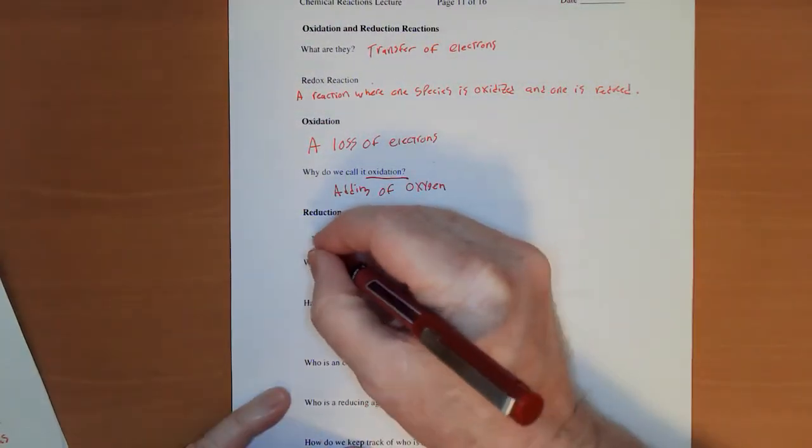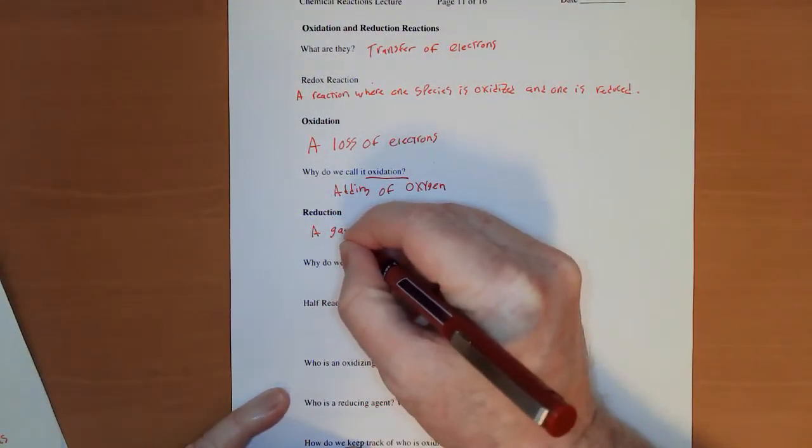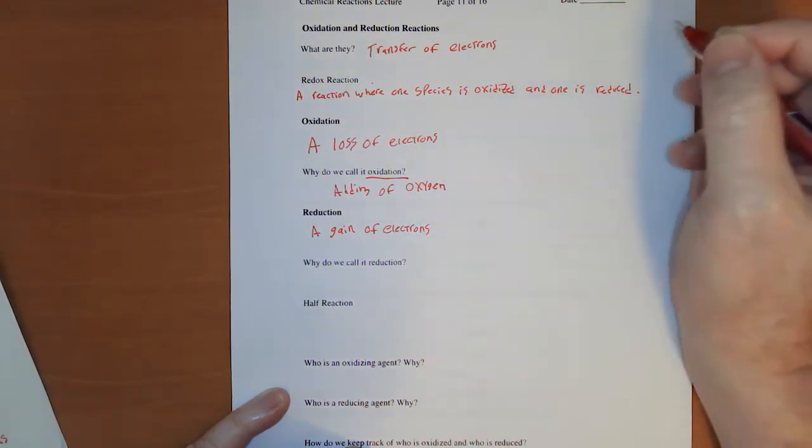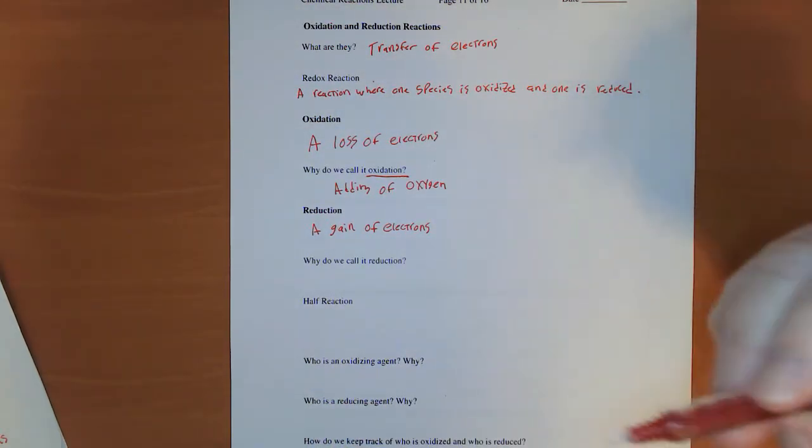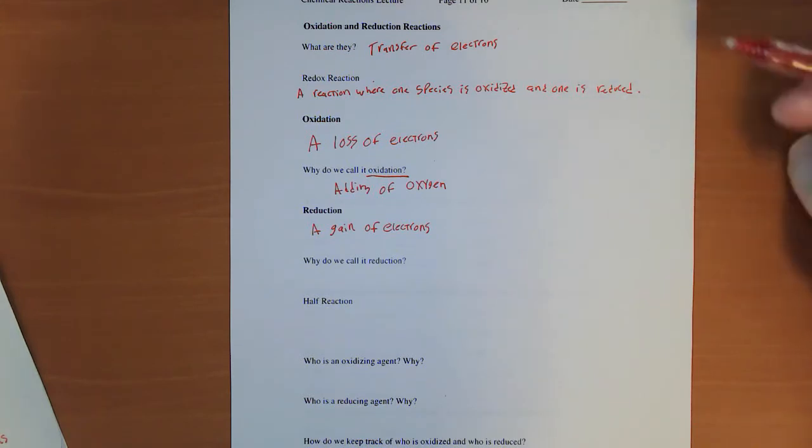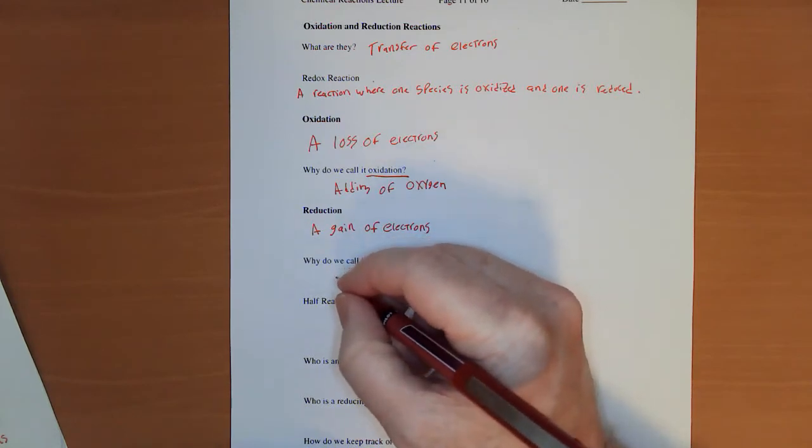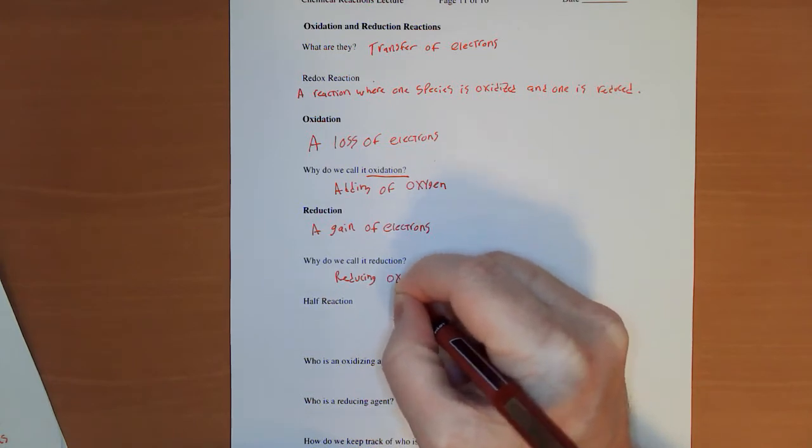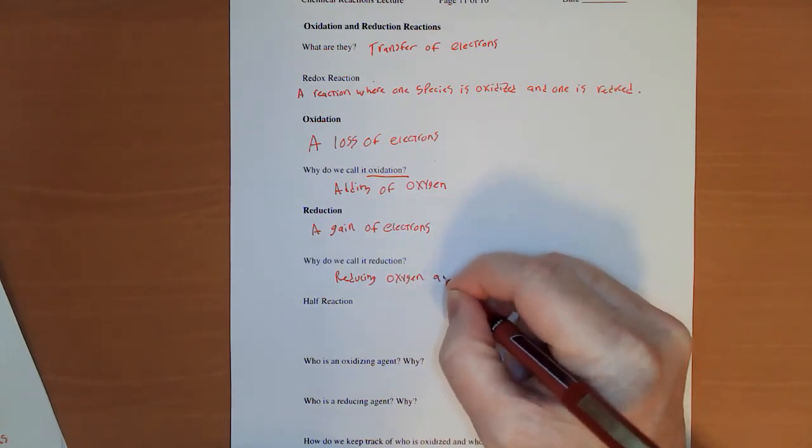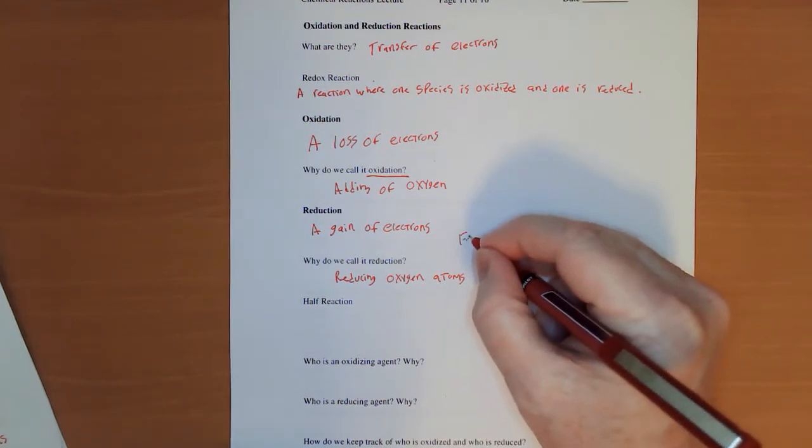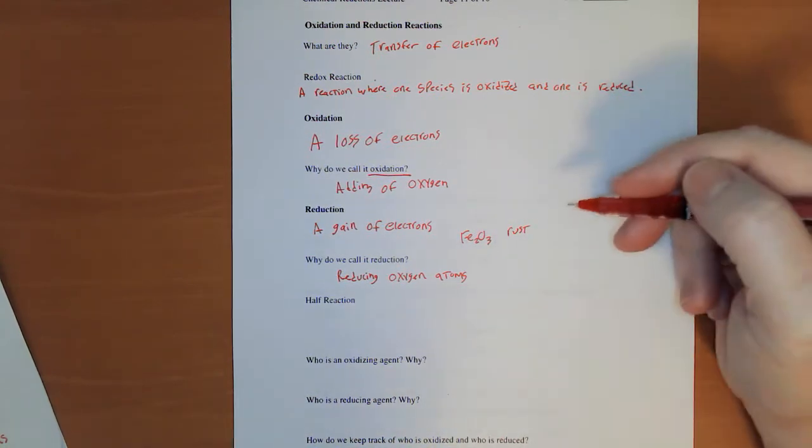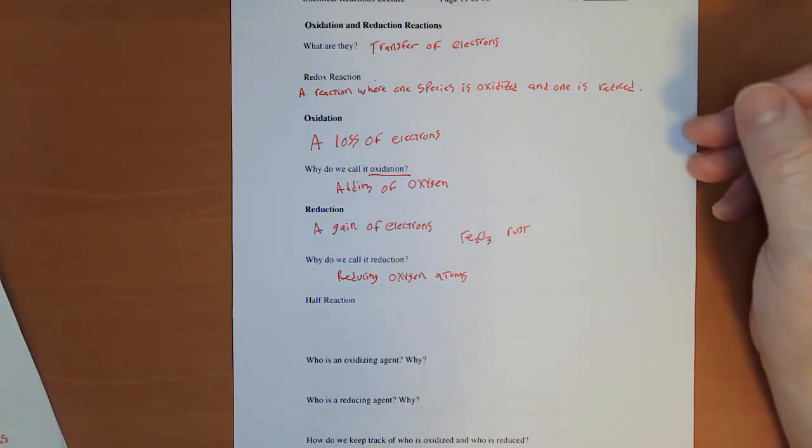Now for reduction, it's a gain of electrons. And again, we started to talk about these before we knew what electrons were, and what we were actually reducing was the number of oxygen atoms in a species. And this was based a lot on Fe2O3, rust, whether we were adding oxygen or removing it.